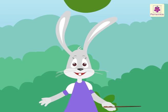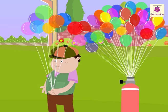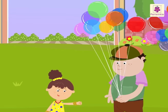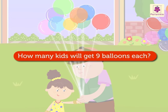If we look at the same example in a different way, there are 45 balloons. Here, we need to divide 45 by 9 to find the quotient. We get 45 divided by 9 is equal to 5.